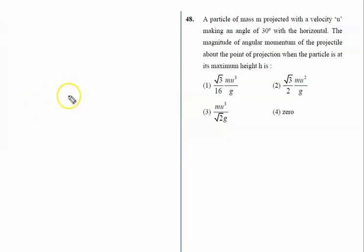A particle of mass m is projected with velocity u making an angle θ with the horizontal. This is a particle of mass m thrown with speed u at an angle of 30 degrees with the horizontal.